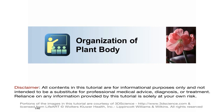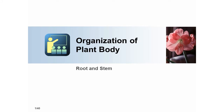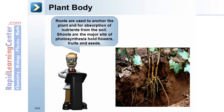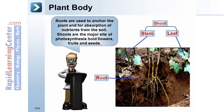This segment of the tutorial will talk about plant body organization, including the roots, stems, meristems, leaves, and flowers. Roots are used to anchor the plant and for absorption of nutrition from the soil. Shoots are the major site of photosynthesis and hold flowers, fruits, and seeds. The stem and leaves are part of the shoot.